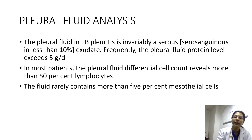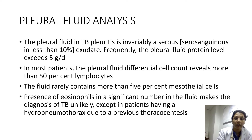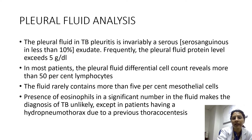The fluid rarely contains more than 5% mesothelial cells. The presence of eosinophils in significant numbers makes a diagnosis of TB unlikely, except in cases with hydropneumothorax or following a previous thoracocentesis.